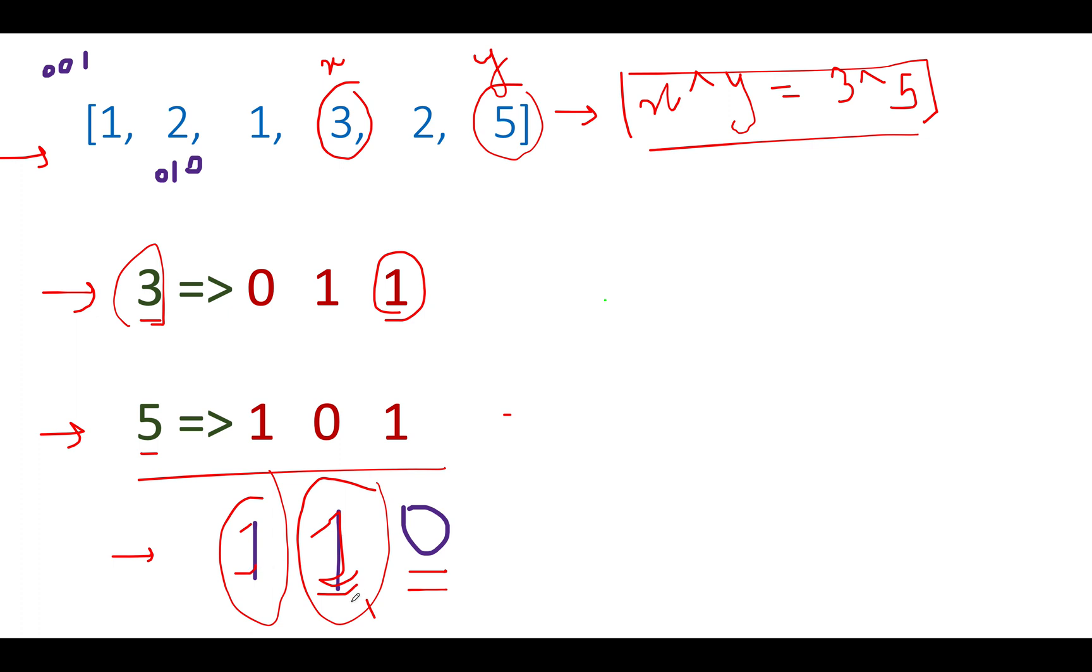Wherever the bit is set in the resultant answer is the area of interest for us. We can pick any set bit in the resultant answer. And hypothetically, let's assume we are interested in the lowest bit set, which is this position. Which position is it? This is the first position. This is the second position.